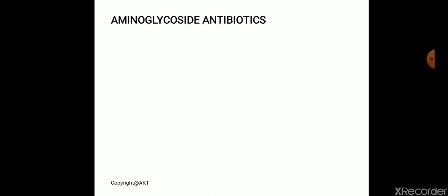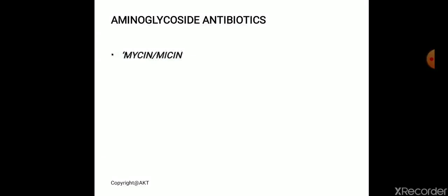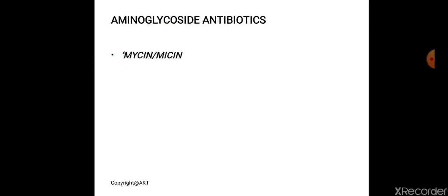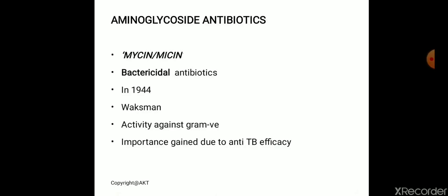The next drug is aminoglycoside antibiotic. Drug names end with '-mycin' or '-micin': if ending in '-mycin', it is obtained from Streptomyces; if ending in '-micin', it is obtained from Micromonospora. It is bactericidal — unlike other drugs that inhibit bacterial proteins — because it causes leakage of the cell membrane. It was introduced in 1944 by Waksman, and gained great importance when found highly effective against TB. Streptomycin is effective for tuberculosis.